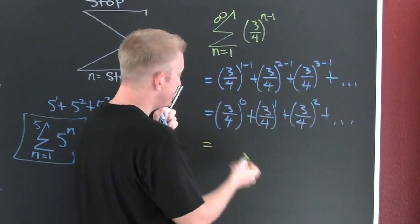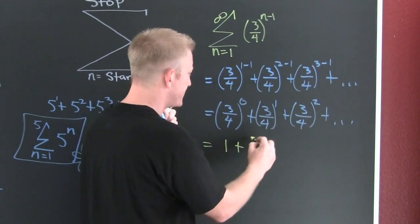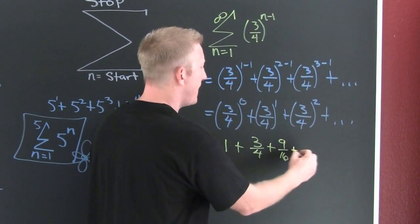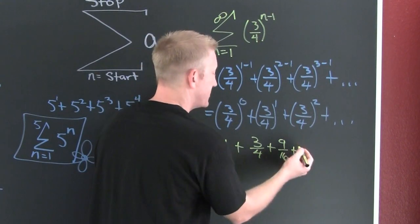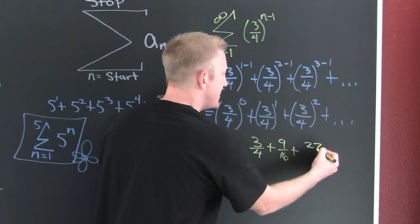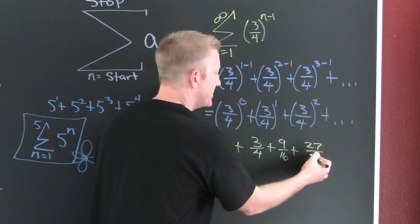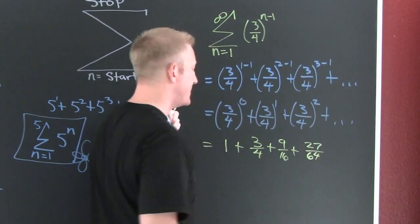This is one plus three fourths plus nine sixteenths plus, what's the next one? Twenty seven, uh, sixty fourths. Yes.